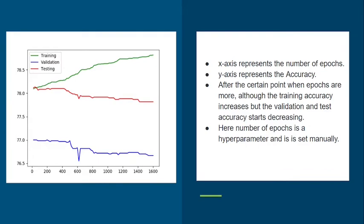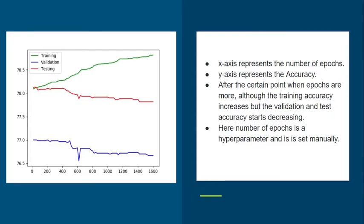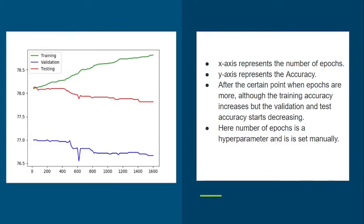Let's see an example. In this plot, we have the number of epochs on the x-axis and accuracy on the y-axis, showing training, validation, and test curves. We can see that at a certain point, as epochs keep rising, the training accuracy increases but the validation and test accuracy starts decreasing — this is the case of overfitting.